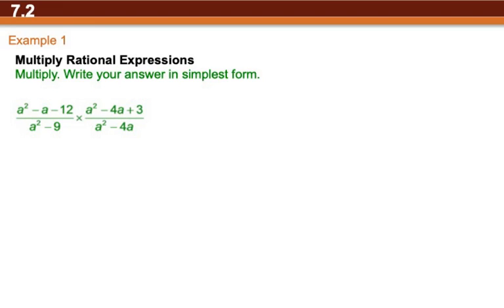Multiplying rational expressions is not much different from just simplifying them. However, it does get a little more complex because now we involve two of them, but the process remains the same. We still need to factor, we just have more things to factor this time.